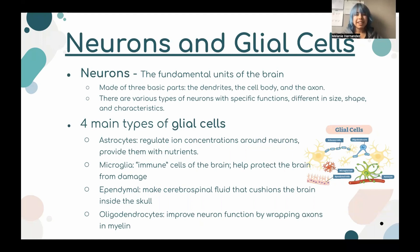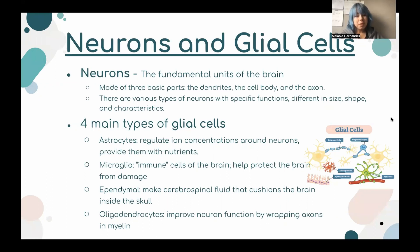Astrocytes help regulate ion concentrations and provide nutrients for neurons. Microglia, tiny cells, act as the immune cells of the brain, helping protect the brain from damage. The ependymal cells make cerebrospinal fluid that helps cushion the brain inside the skull. The oligodendrocytes help improve neural function by wrapping axons in myelin.